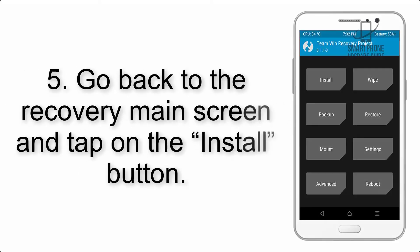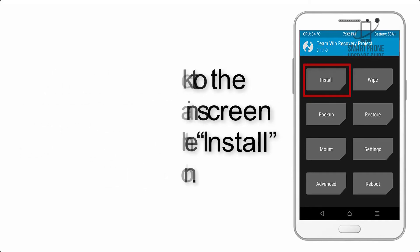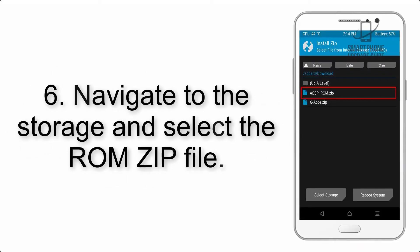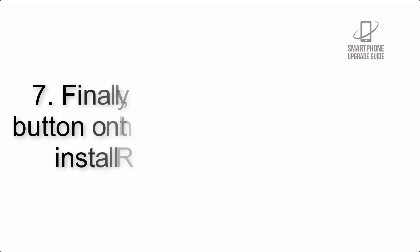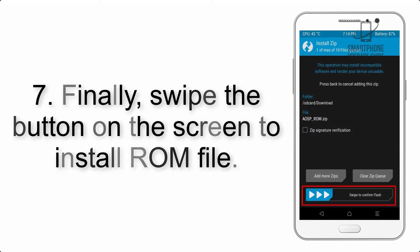Step 5: Go back to the recovery main screen and tap on the Install button. Step 6: Navigate to the storage and select the ROM zip file. Step 7: Finally, swipe the button on the screen to install the ROM file.